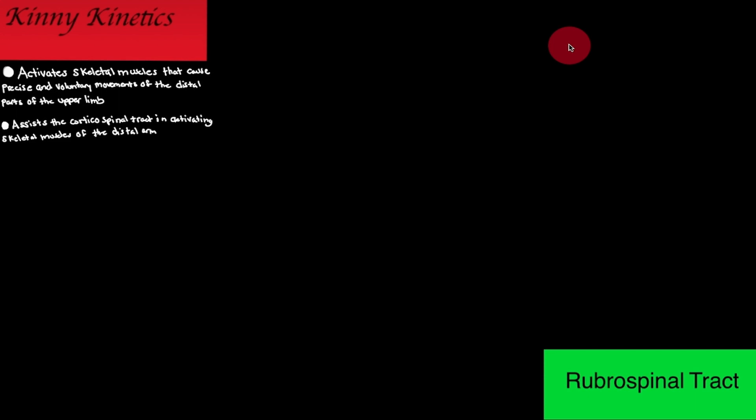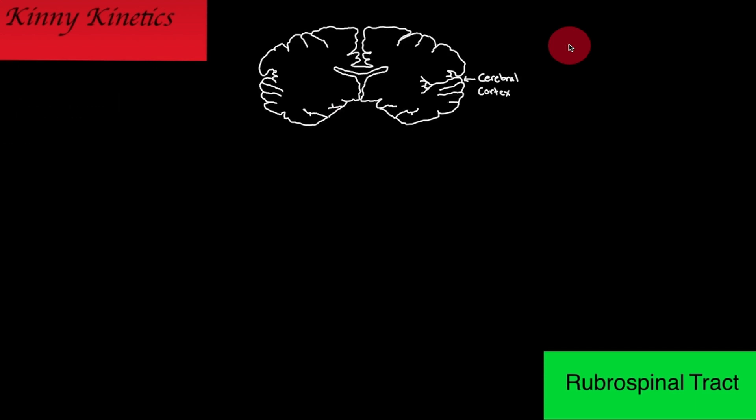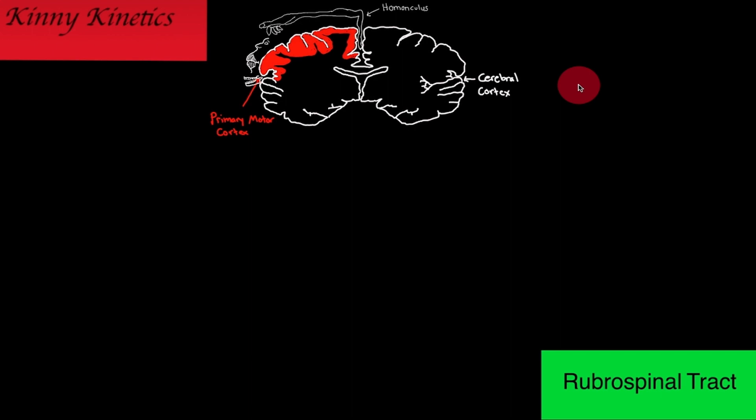So here we have a picture of the cerebral cortex, and as you can see shaded in red is the primary motor cortex. The primary motor cortex has its own homunculus. If you recall from my previous videos, the homunculus is a map of all the body parts.